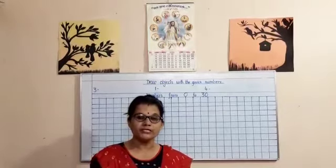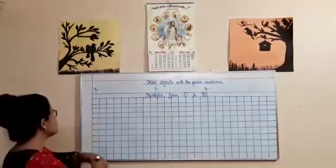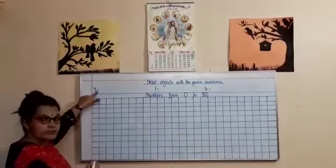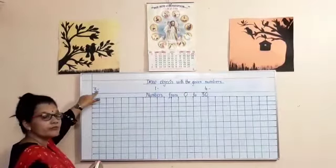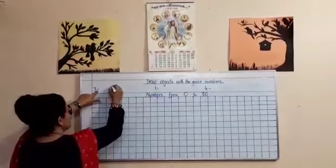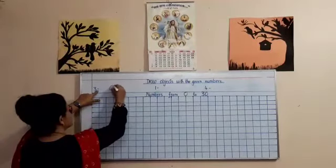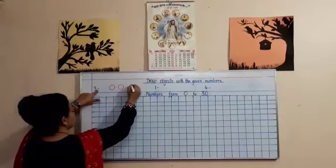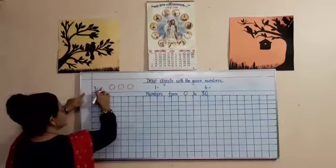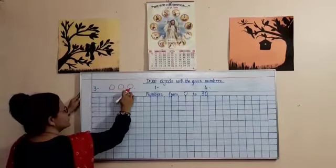Draw objects with a given number. So, come let's read this first number. What's the first number? 3. So, you have to draw 3 objects. You can draw anything. It can be a circle or anything. So, this number is 3. So, you have drawn 1, 2, 3.